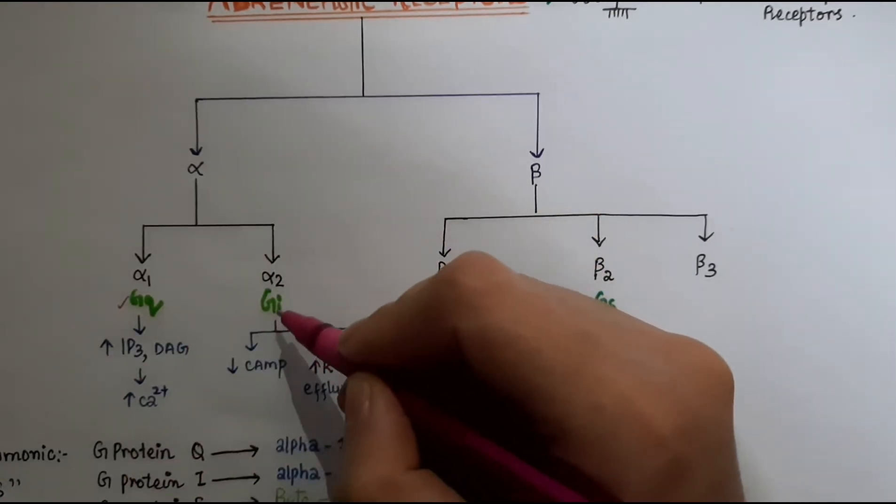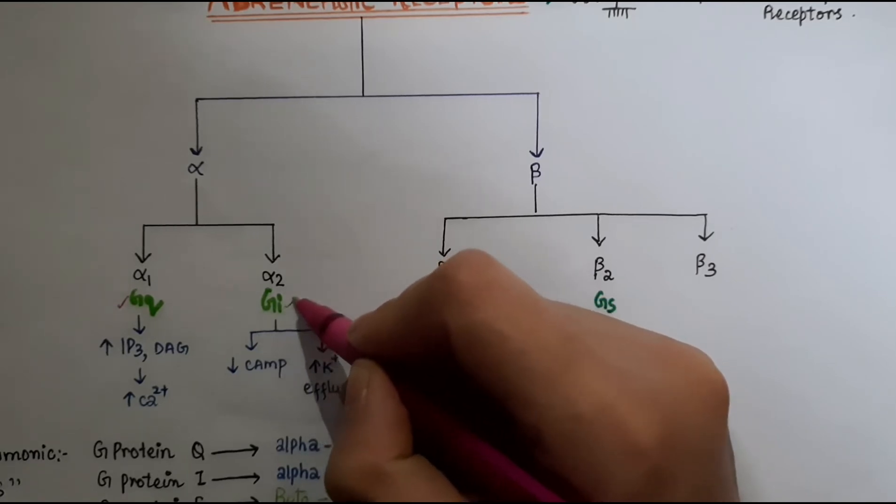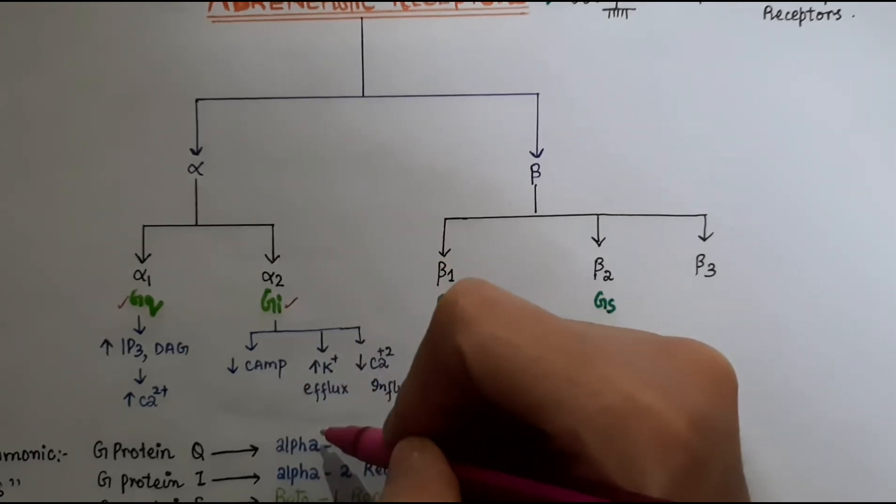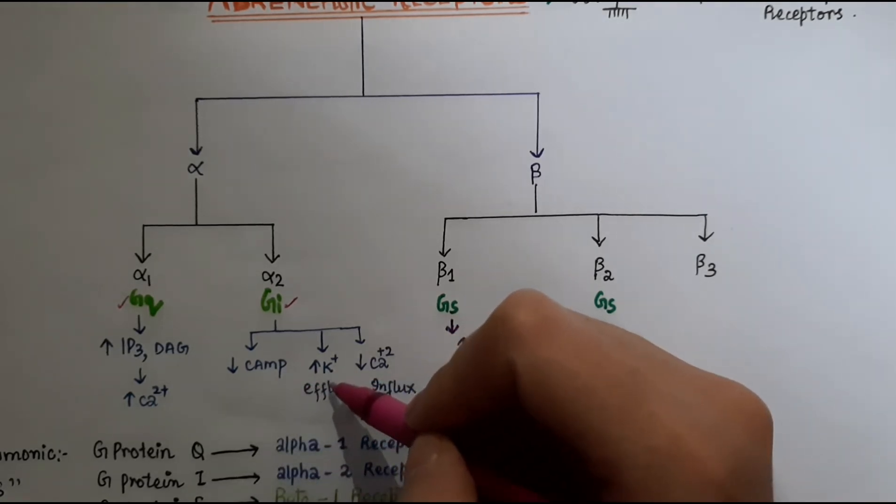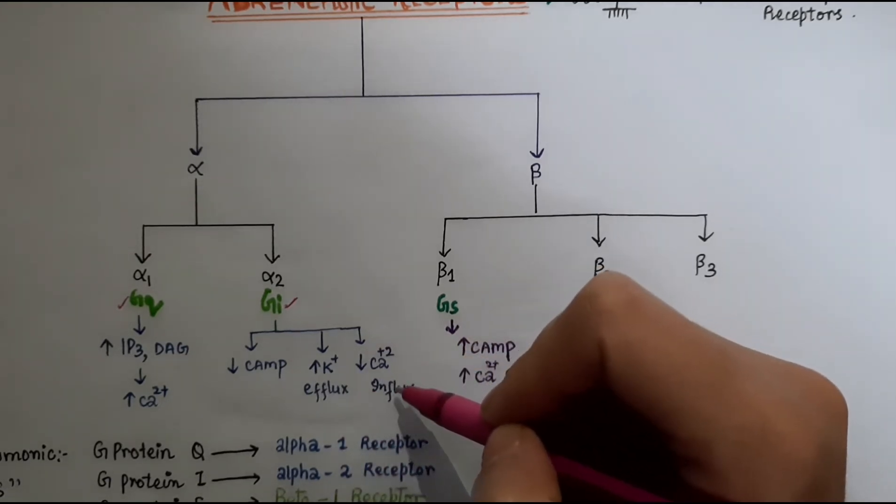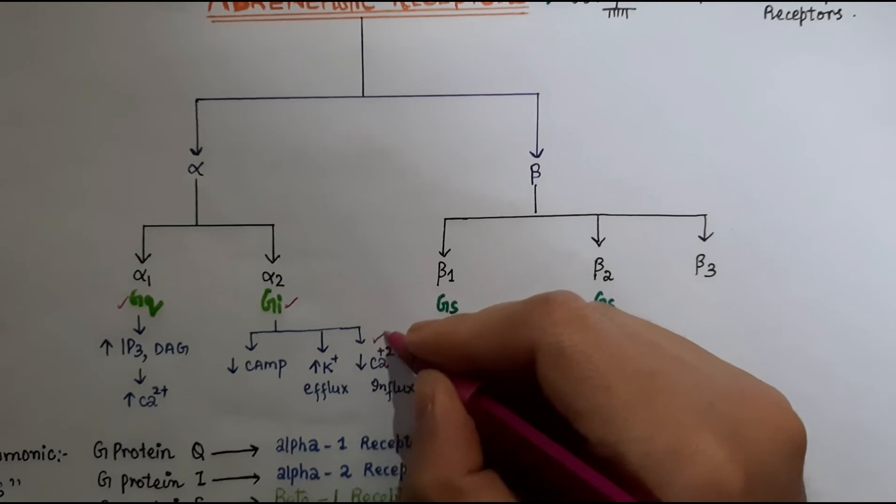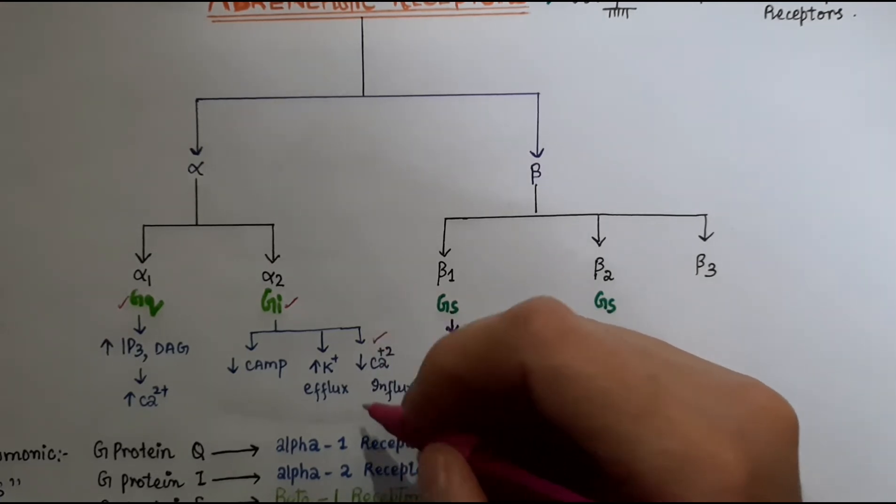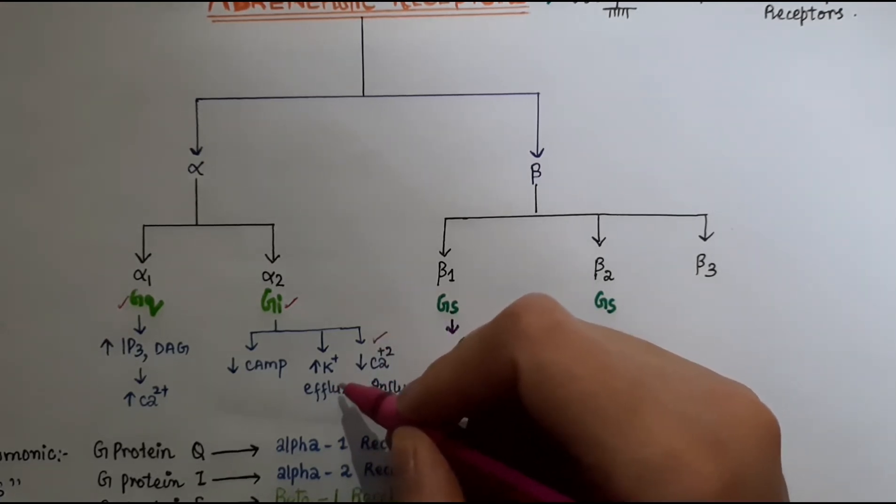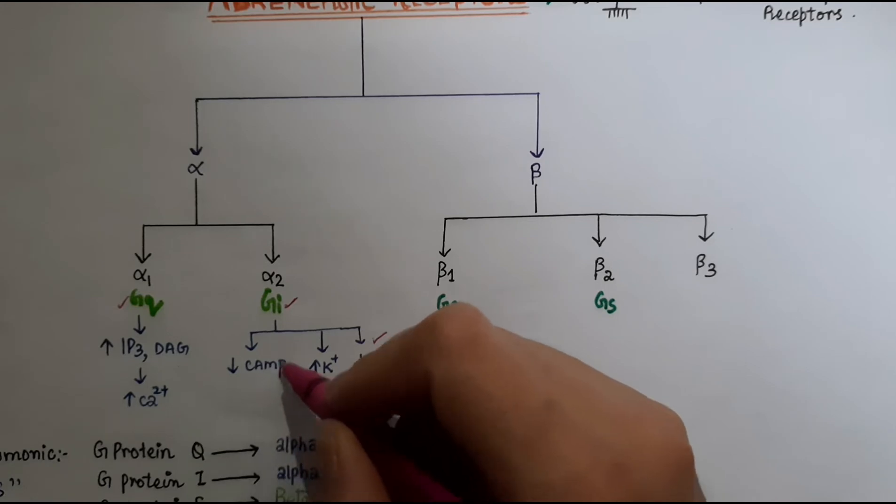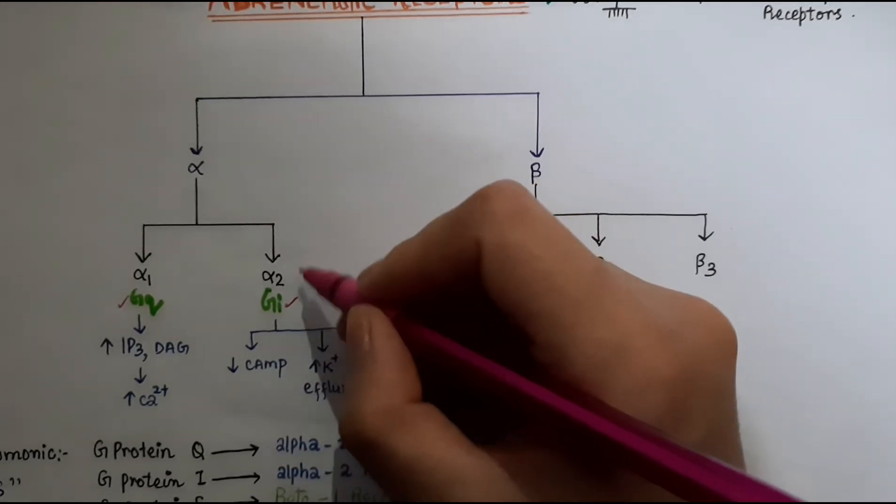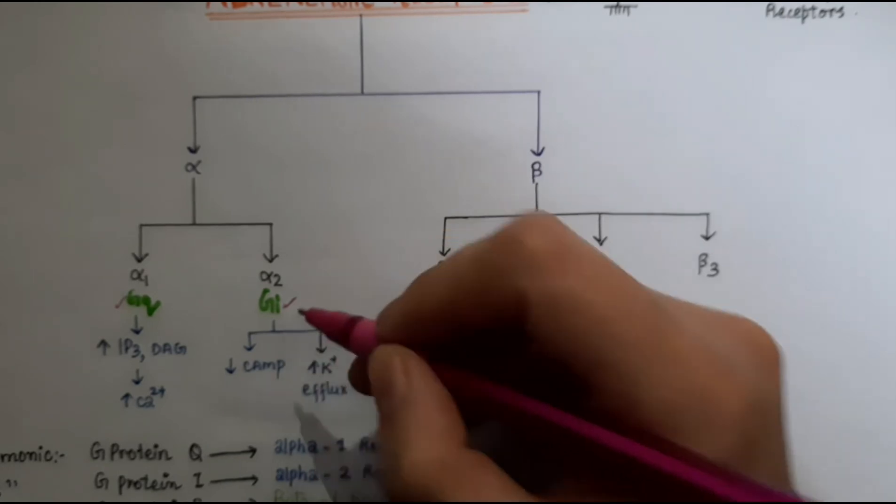If we talk about the alpha-2 receptor, this is linked to the Gi, G-inhibitory form of G-protein. This causes cyclic AMP to decrease, calcium efflux to extracellular fluid increases, and potassium influx increases. Alpha-2 is associated with G-inhibitory.